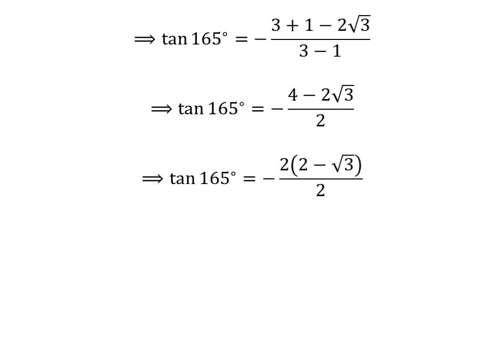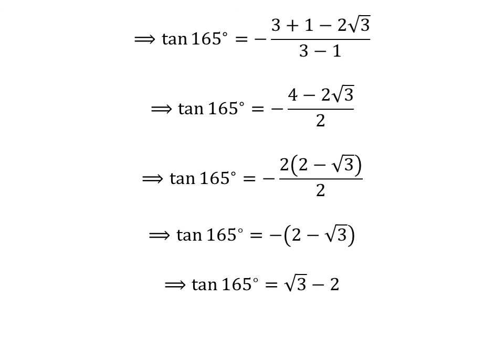Here I have taken out the common factor 2 in the numerator. Cancelling out the common factor 2 in the numerator and the denominator gives us tangent of 165 degrees is equal to minus 2 minus square root of 3. Opening up the bracket gives us tangent of 165 degrees is equal to square root of 3 minus 2.